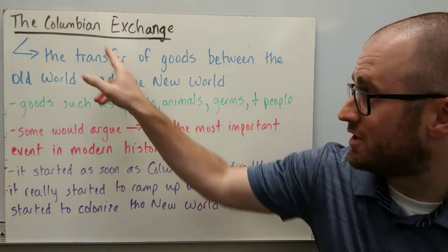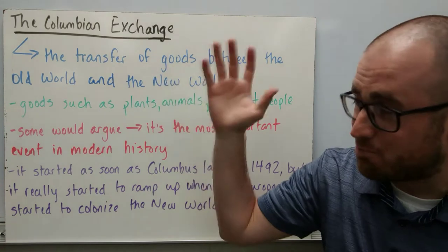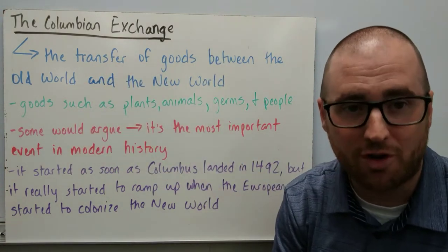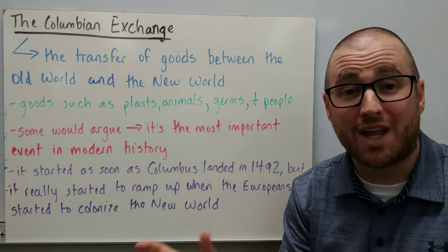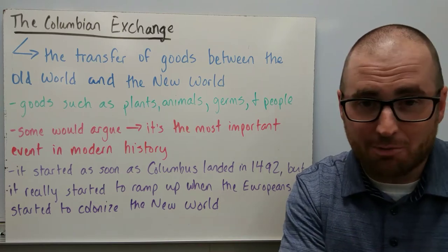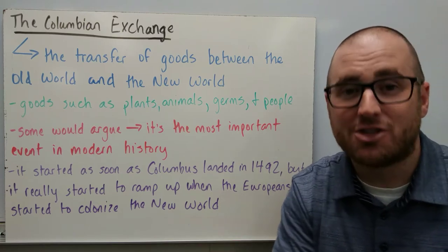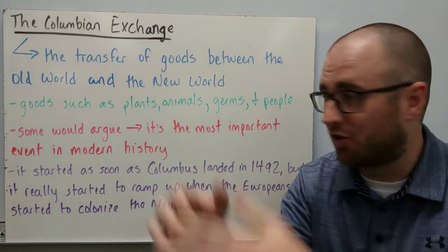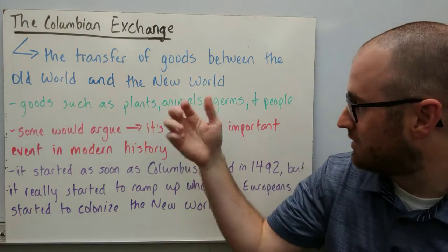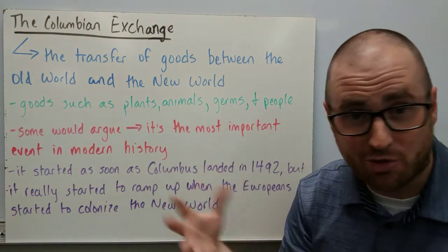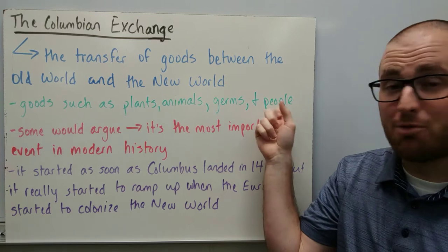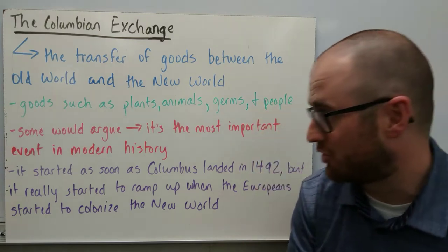So the definition of the Columbian Exchange is basically this: the transfer of goods between the old world and the new world. What came from Europe to the Americas, and what the Europeans found in the Americas and brought back to Europe. This includes goods like plants, animals, germs — we talked a lot about that with microbes — diseases, and people. People were transferred as well.